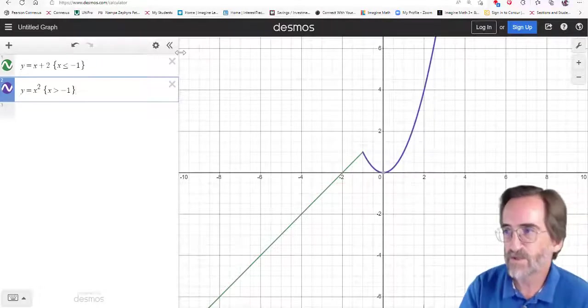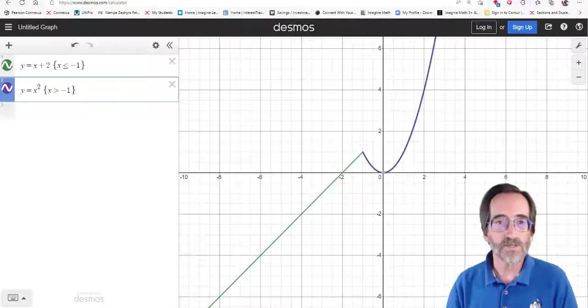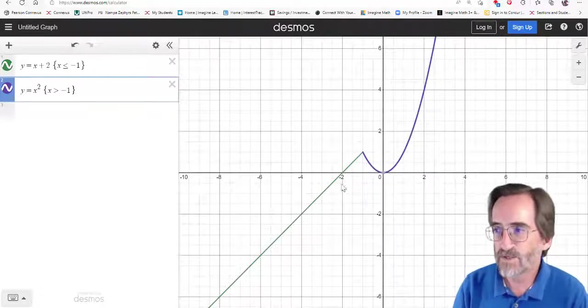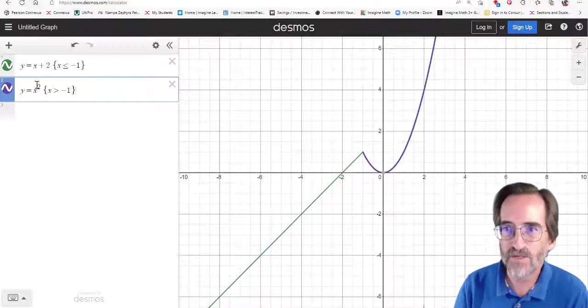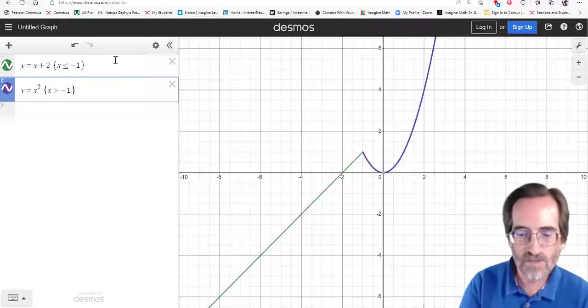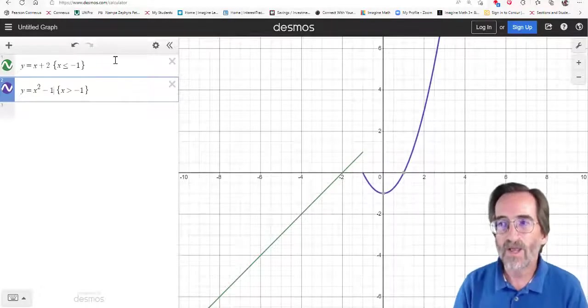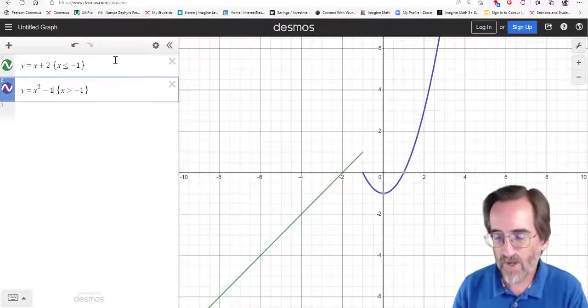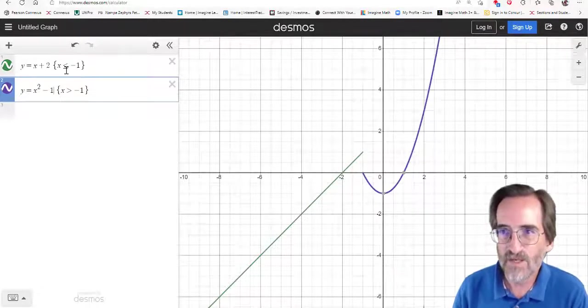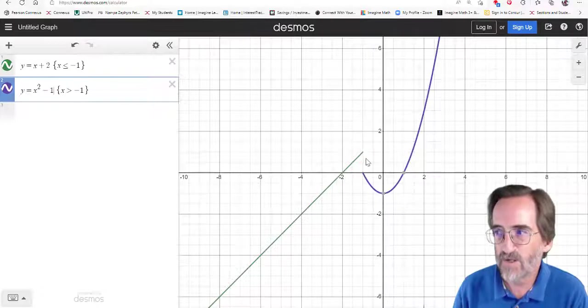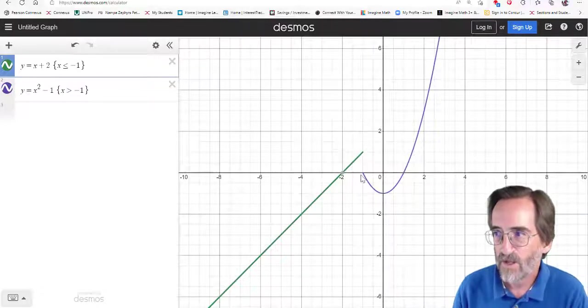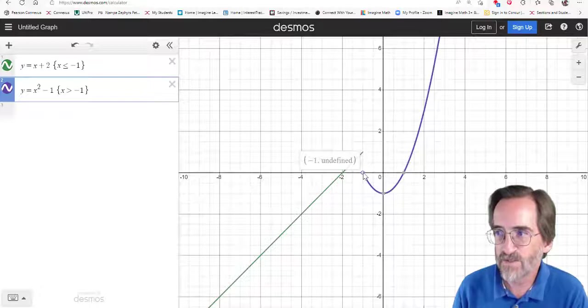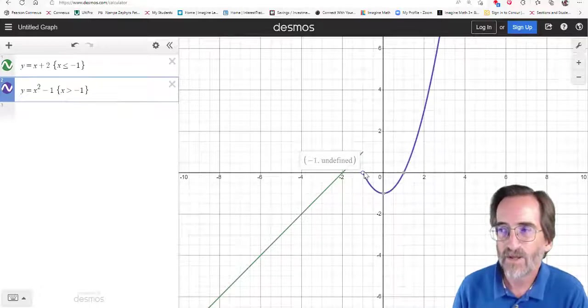So, this is a piecewise function. And it is continuous. There is no discontinuity here. But what if I do this? What if I do x squared minus 1? Now, there is a jump discontinuity here. And technically, the way I would graph this, because I let x equal negative 1, there would be a filled-in circle at the end of the green line. And there would be a hole, undefined, for x equals negative 1.